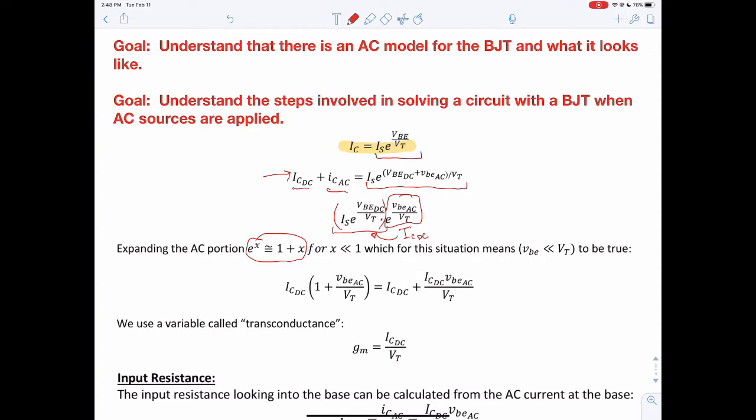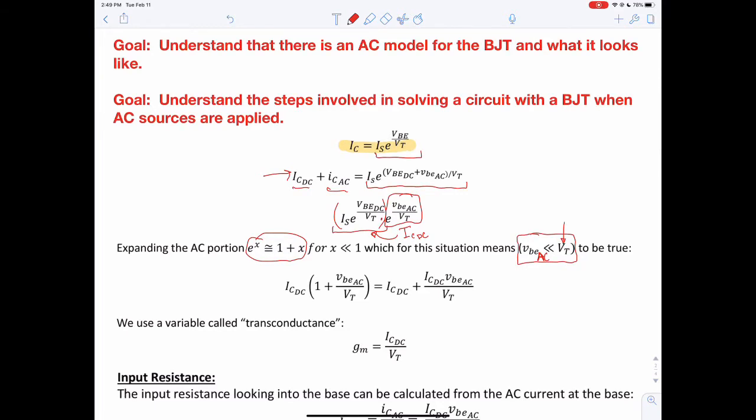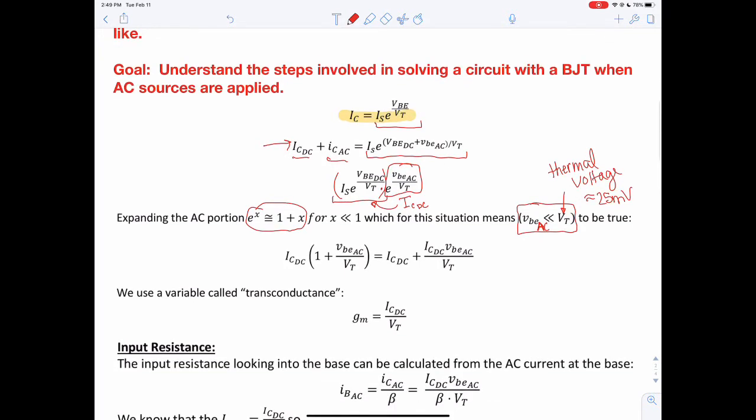That is where this gets its name, the small signal, in that it needs to meet the requirement that VBE, which is the AC value across the base to emitter, is a lot less than VT. Remember, VT is your thermal voltage, and at room temperature that thermal voltage is approximately 25 millivolts. So that means the AC portion of the voltage across the base to emitter needs to be less than 25 millivolts in order for this assumption and approximation to be correct.